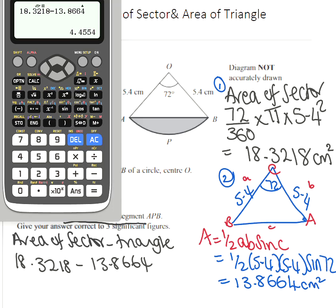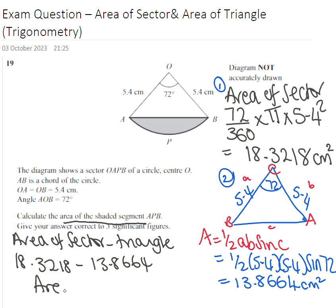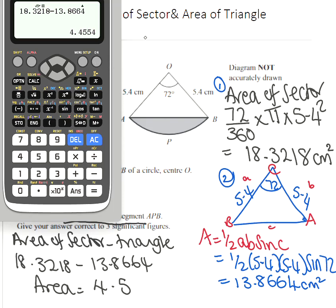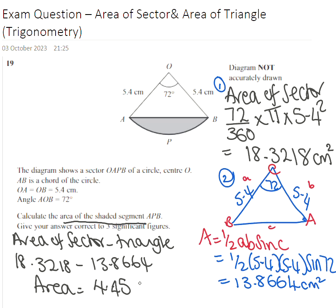I have 4.4554. So the area is equal to 4.4554. We need to answer it to three significant figures. So this is going to be 4.46, 4.46 centimeters squared, three significant figures.